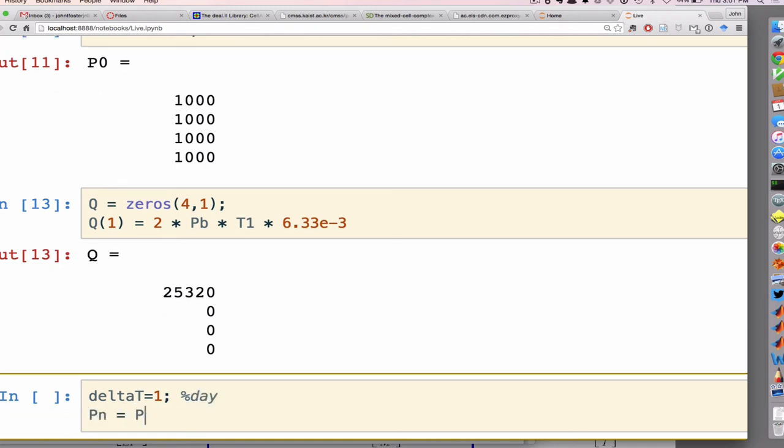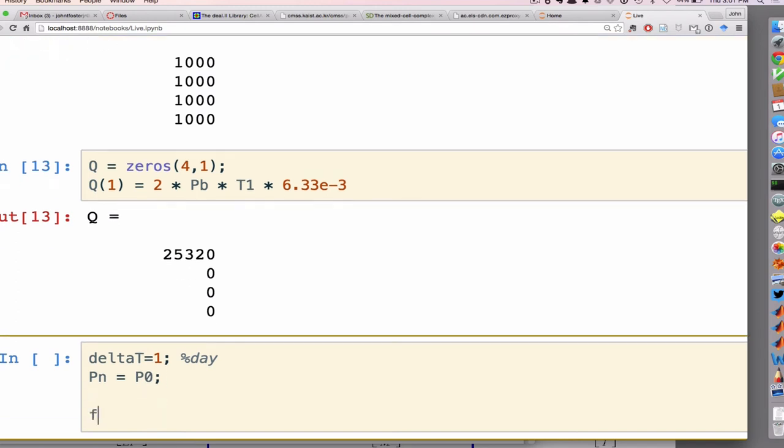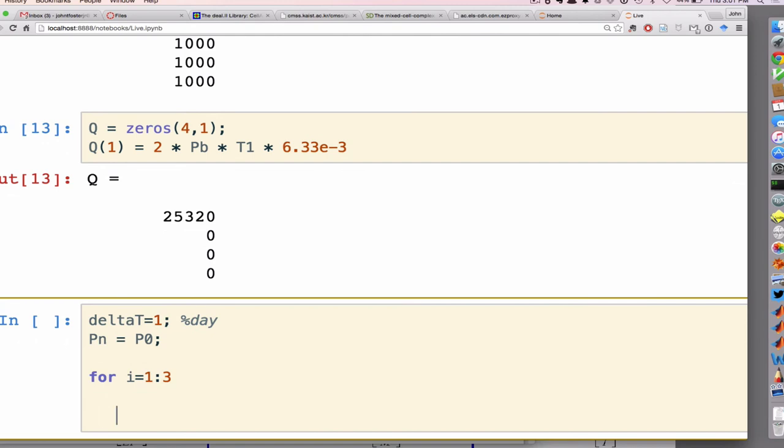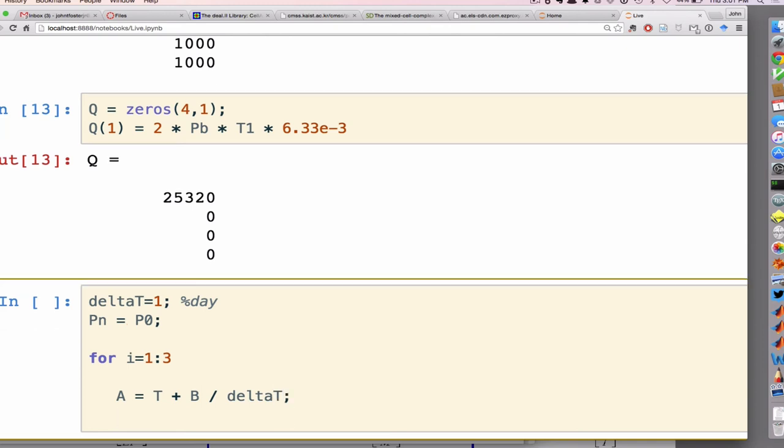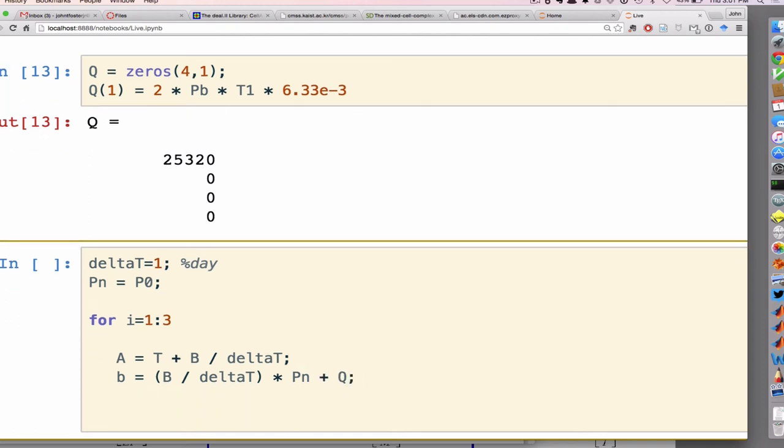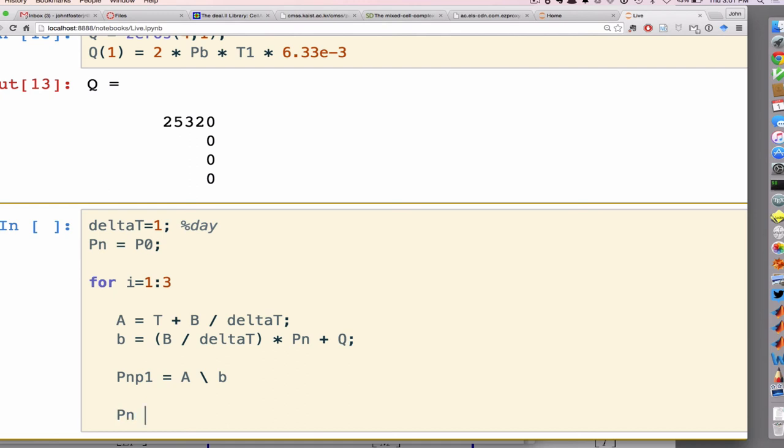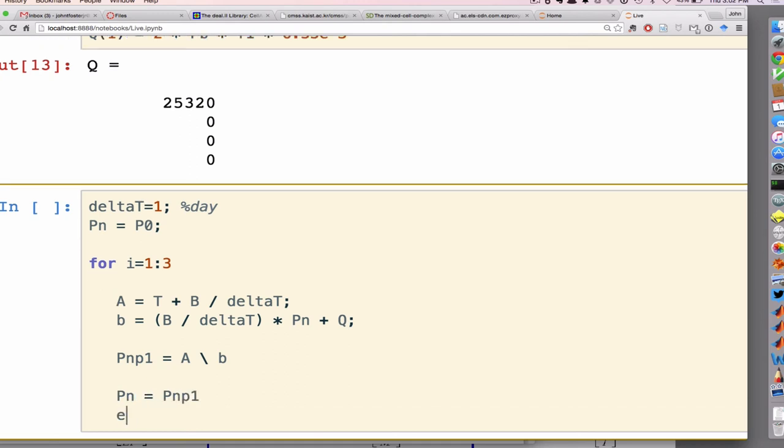So we'll use a delta T of one day, and our P at N is equal to P0. So the first time through the loop, we're going to run it for three days, so for I equals 1 to 3. I'm going to make a matrix A, we're using the implicit method, so A is T plus B over delta T. So that's the left-hand side. The right-hand side is B over delta T times PN plus Q, and then PN plus 1 is equal to A backslash B, so I'm just solving the linear system, and then finally I'm going to set PN plus 1 to PN and end the loop.